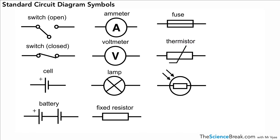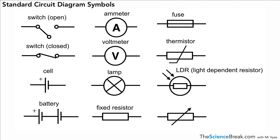This is what's called a light dependent resistor. This is like a light sensor, and it can be used in circuits to detect light and switch circuits on and off depending on what those circuits do.